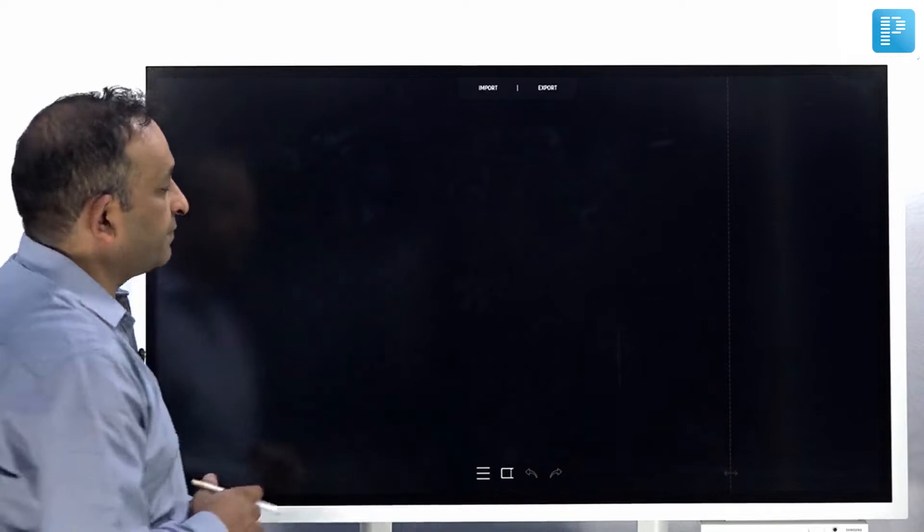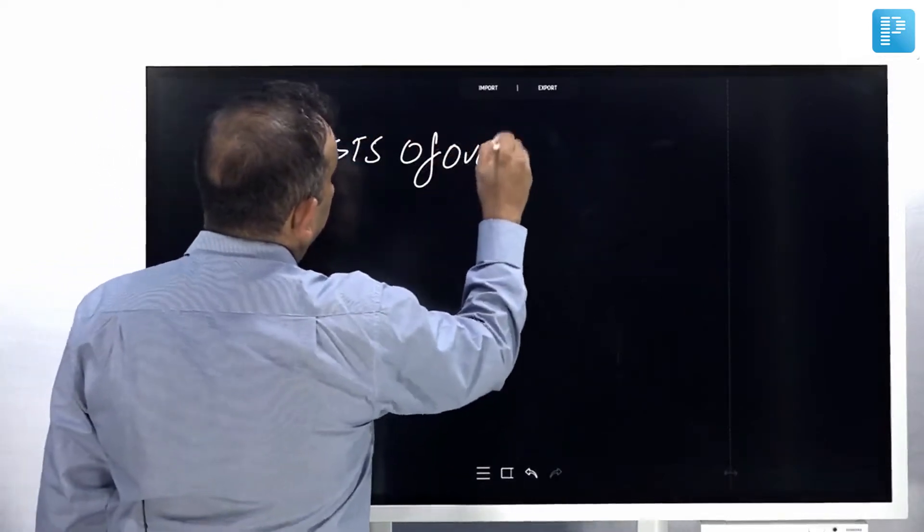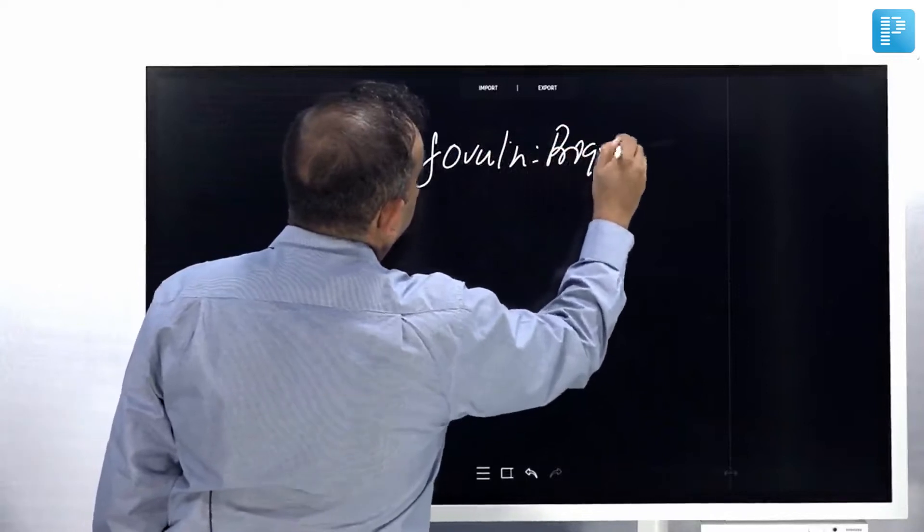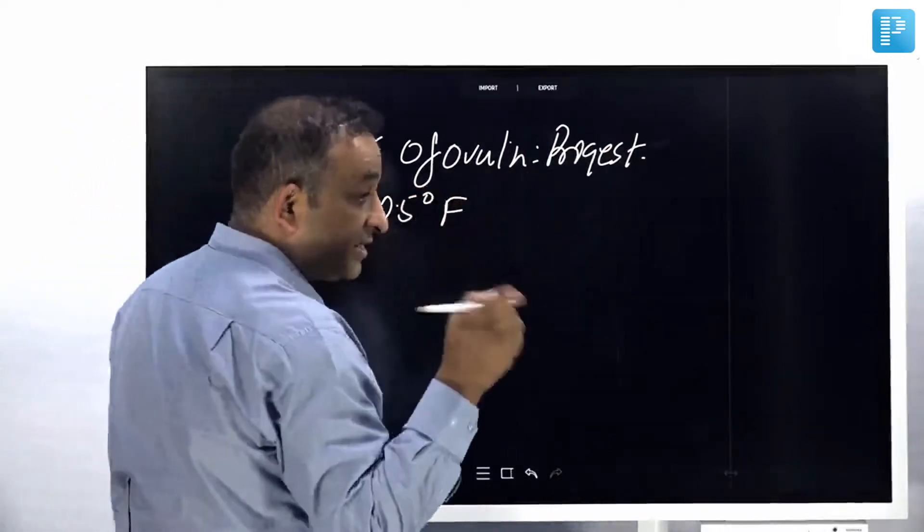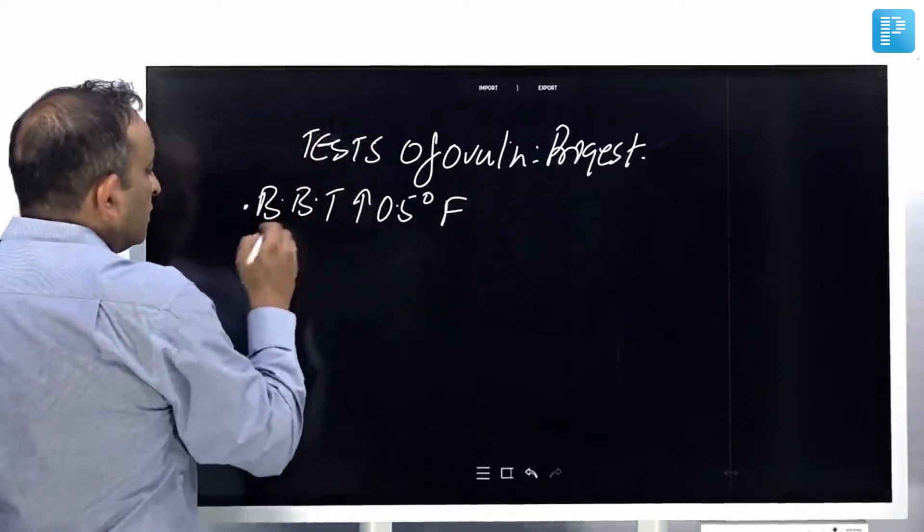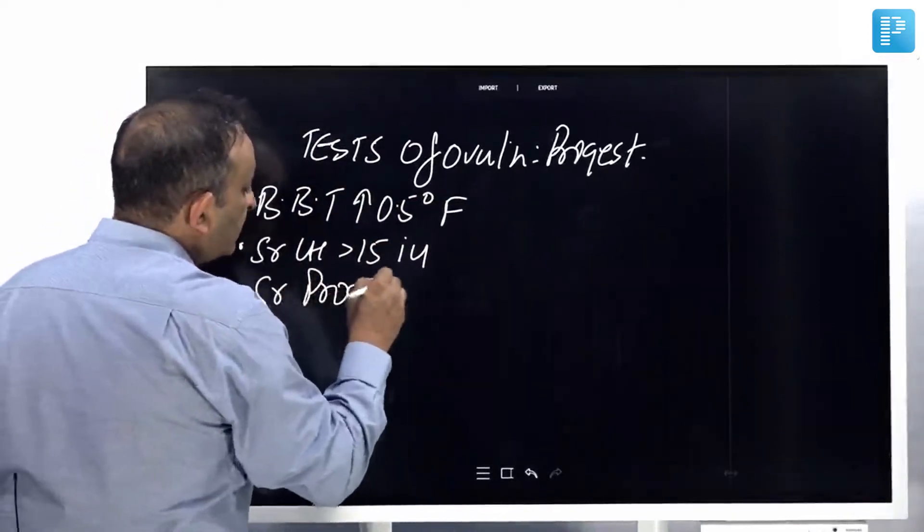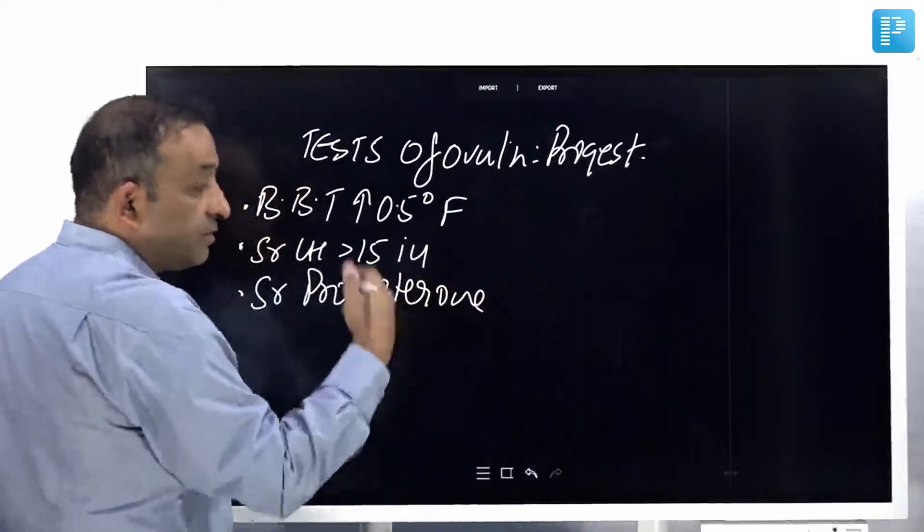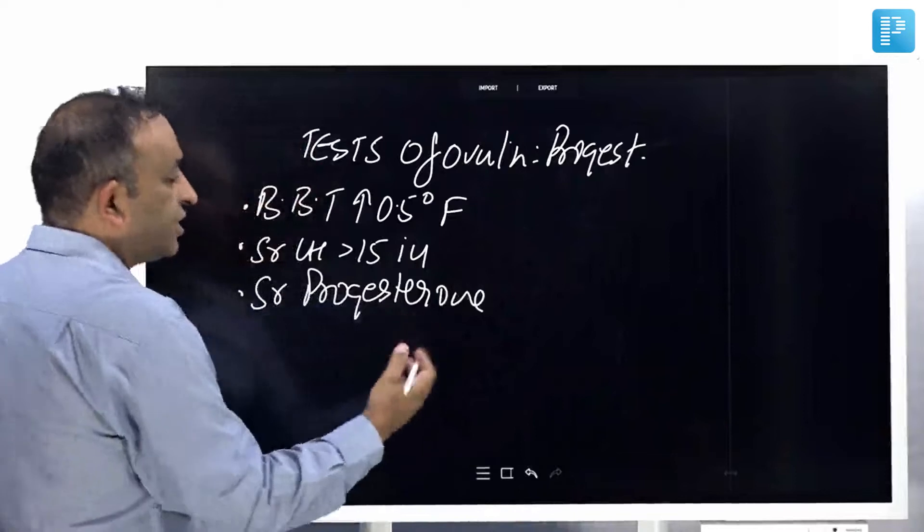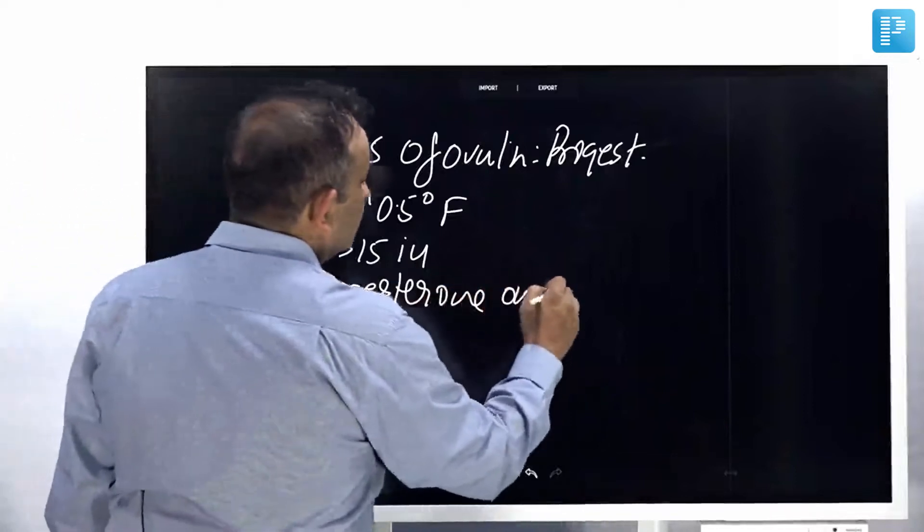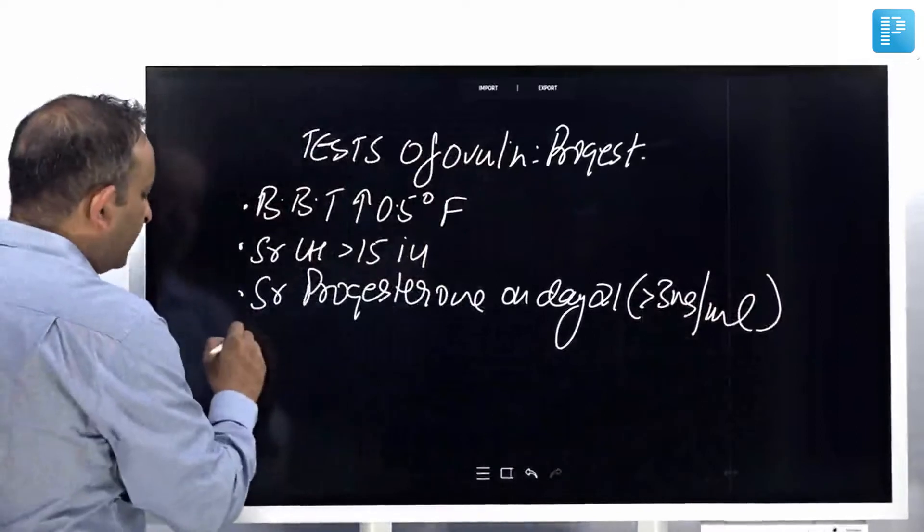Let's see the tests of ovulation. When you want to assess ovulation, you look for the effects of progesterone. Progesterone is a thermogenic hormone, so basal body temperature increases by 0.5 degrees Fahrenheit, not centigrade. Serum LH will increase more than 15 international units. Serum progesterone obviously increases and must be measured on day 21. Since expected ovulation is day 14, after 6-7 days the values are very high. Serum progesterone on day 21, if it is more than 3 nanograms per ml, indicates ovulation.